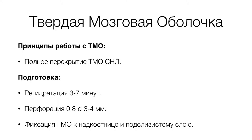Фиксация твёрдой мозговой оболочки проводится к надкостнице и под слизистым слоем абсолютно по тем же принципам, как и фиксация аутотрансплантата. Единственное: при её установке не обязательно создавать в принимающем ложе зону питания для диффузного питания аутотрансплантата, потому что она будет достаточно пропитываться кровью, а потом прорастать адвентициальными клетками.